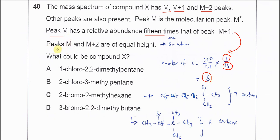So the M and M+2, the heights are equal. M and M+2 equal height tells us that it has one bromine atom in the molecule.